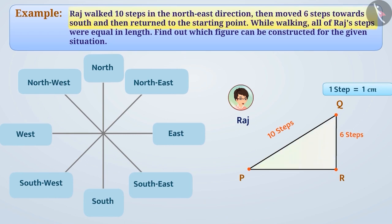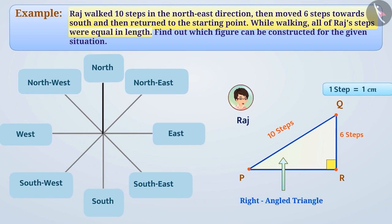Therefore, we can say that a triangle will be formed in the given situation. On the basis of the angles, we see that point P is in the west direction from point R, and point Q is in the north direction. This means that side PR and side QR form a right angle with each other — that is, triangle PQR is a right-angled triangle in which angle R is a right angle. So side PQ is the hypotenuse and sides QR and PR are the legs. Using the given measurements, hypotenuse PQ equals 10 steps equals 10 cm, and side QR equals 6 steps equals 6 cm.